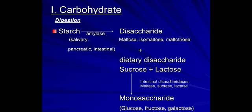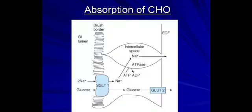Carbohydrates are digested to disaccharides such as maltose and isomaltose. These are then broken down to monosaccharides in the presence of disaccharidases like maltase and sucrase. The final products of carbohydrate metabolism — starting from starch, a polysaccharide — are a disaccharide, and finally monosaccharides: glucose, fructose, and galactose.